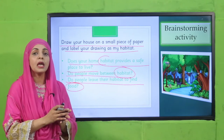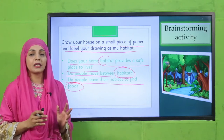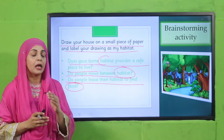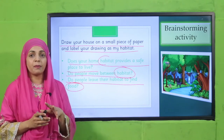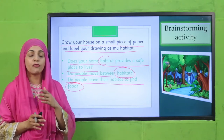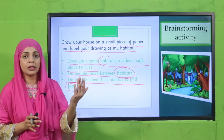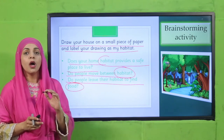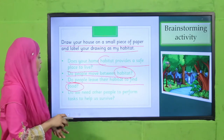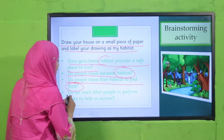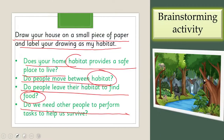The same applies to animals and plants. Just as we need to search for food, animals also move from one place to another to find food. Plants make their own food, but animals have to move. We also need other people to perform tasks to help us survive.